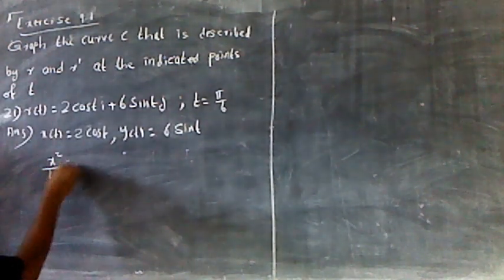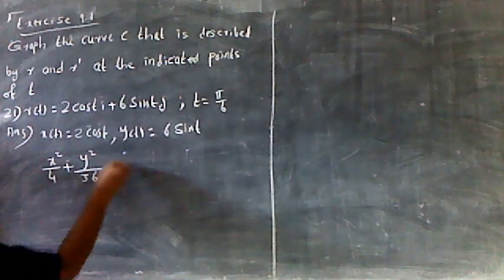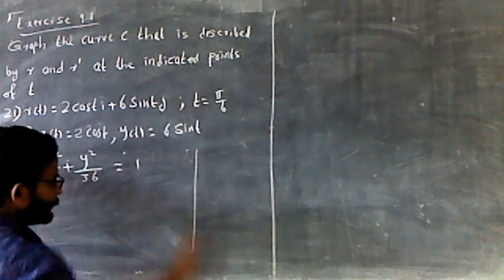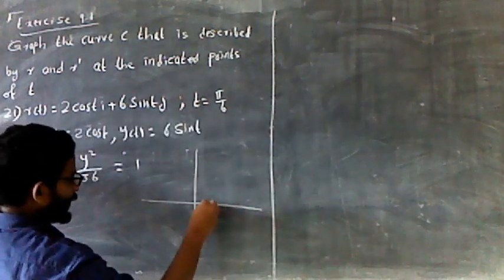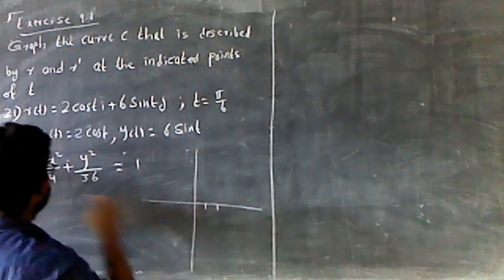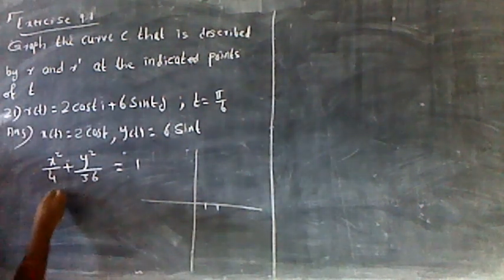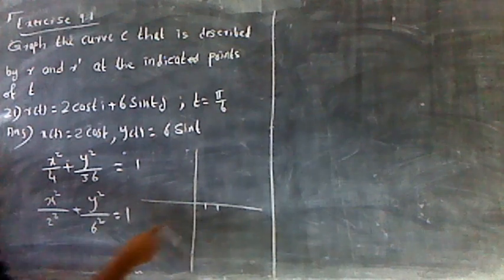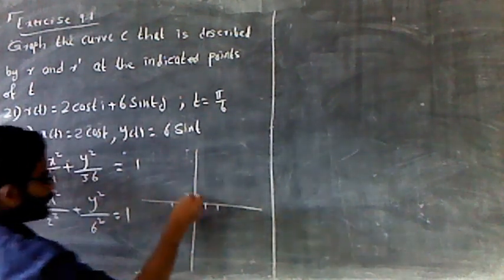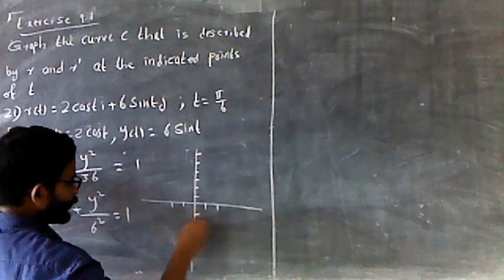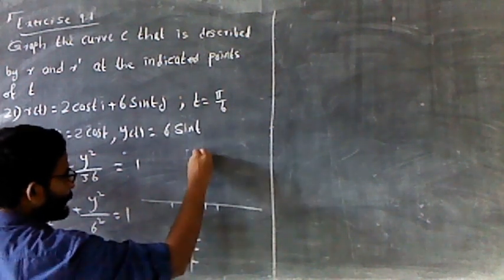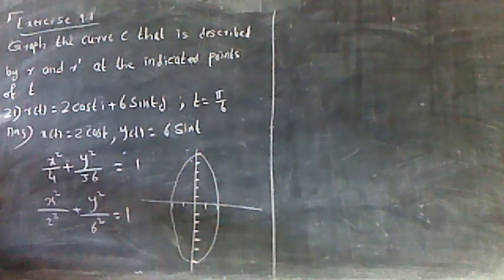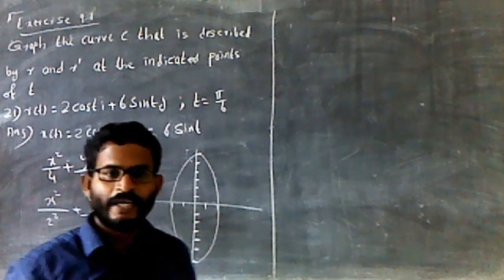X squared over 4 plus y squared over 6 is equal to 1. This confirms the curve is an ellipse.